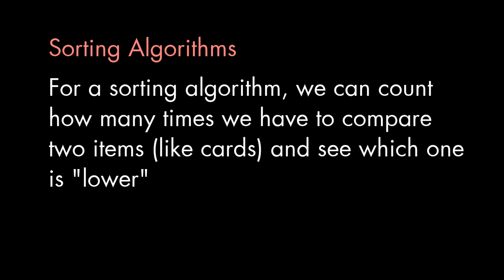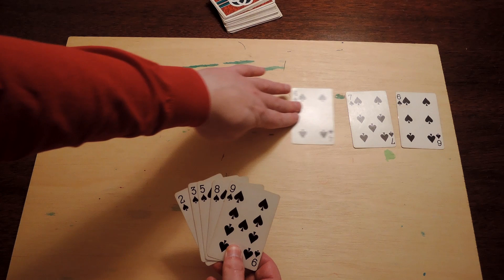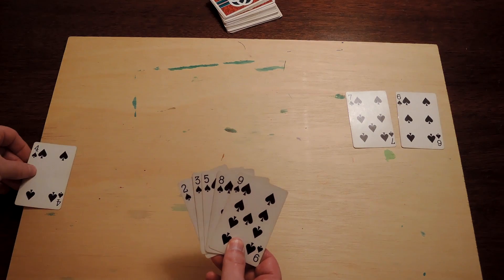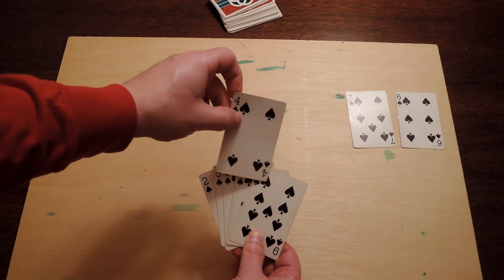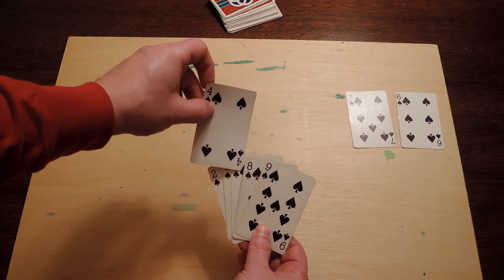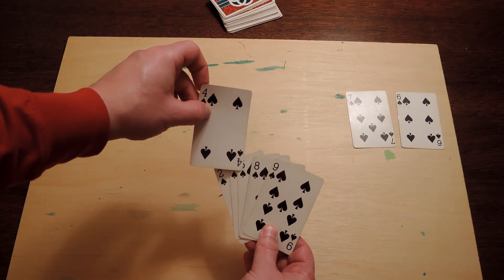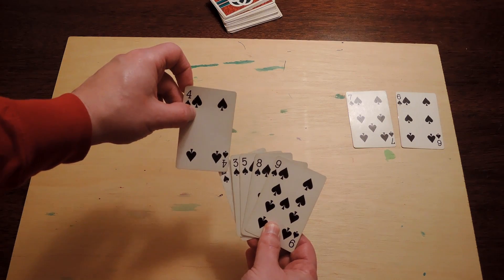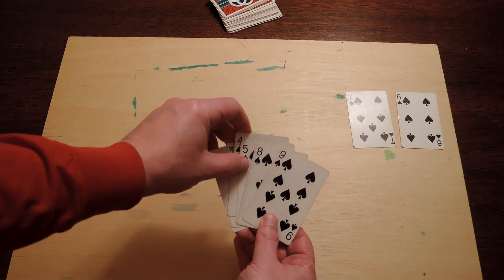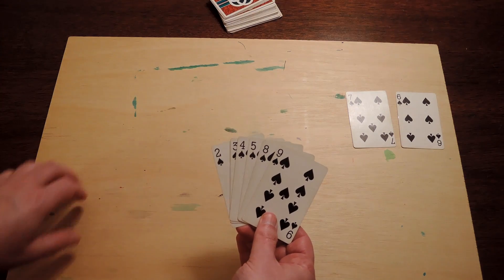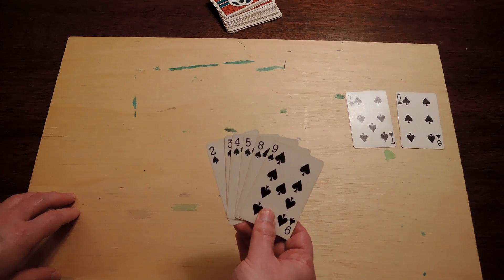In the case of sorting algorithms, for example, we might ask ourselves how often the algorithm has to look at two cards and determine which card is lower. Now, think about inserting one card in the insertion sort algorithm. We may not think about it just like this, but basically, we've got to start on the right end of our previously sorted cards and compare each card to the card we're going to insert next until we find a card in our hand that is lower than that new card. And then we just insert to the right of that spot.